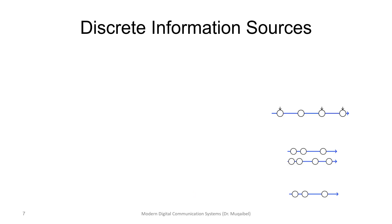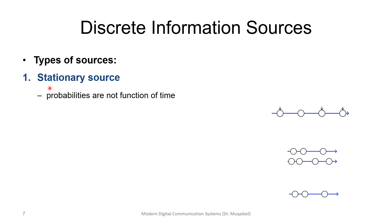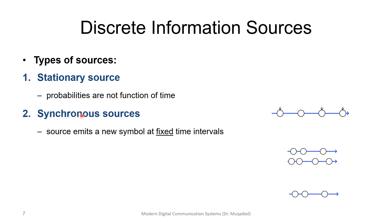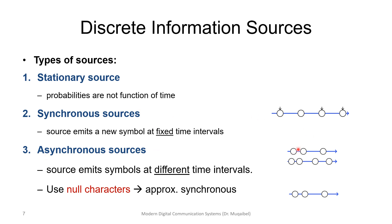Now let's look at the types of sources. Stationary sources have probabilities that are not a function of time — the set of probabilities is always fixed. Synchronous sources emit a new symbol at fixed time intervals. Asynchronous sources produce symbols at time instances that are not fixed, so the interval between symbols varies. We can approximate an asynchronous source as synchronous by including dummy or null characters in between.